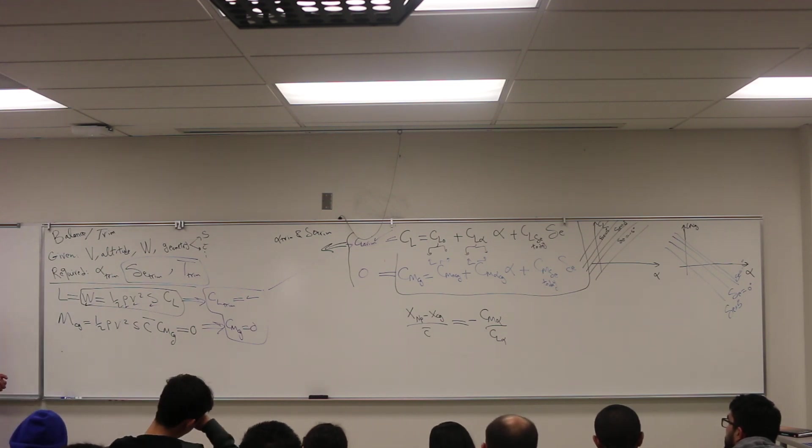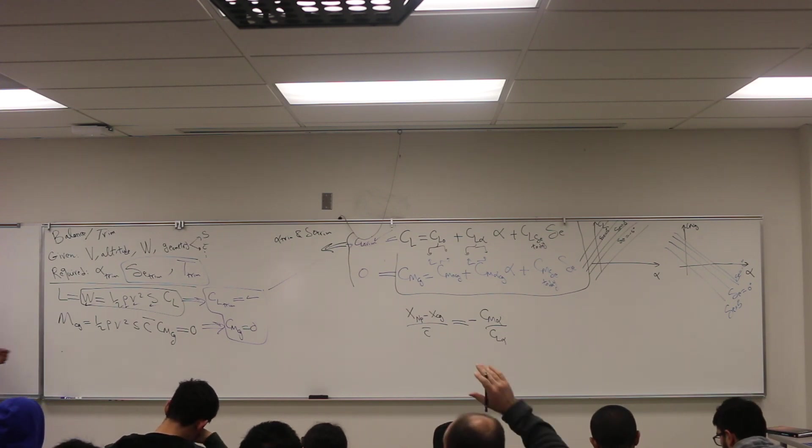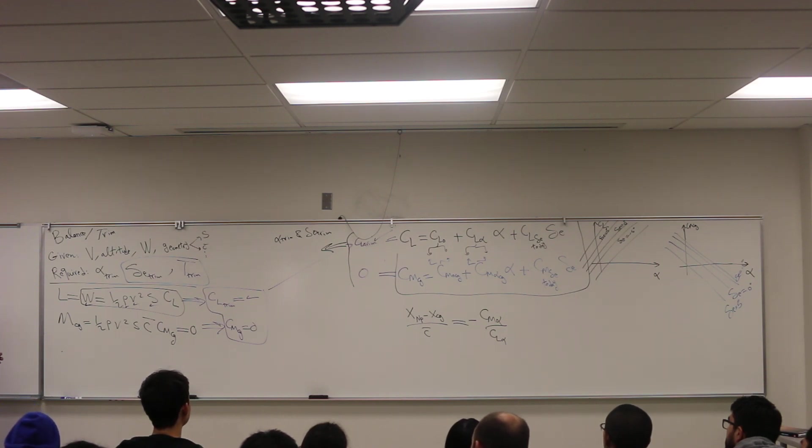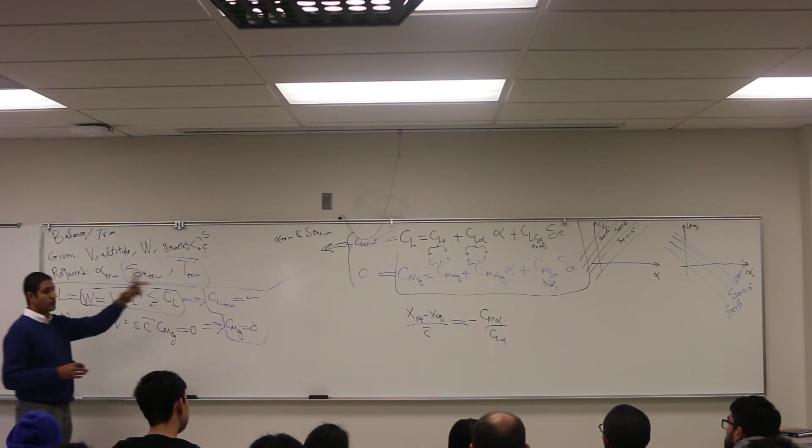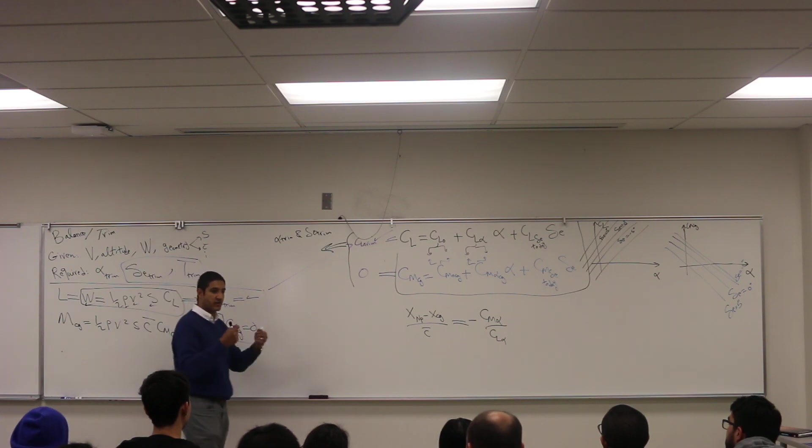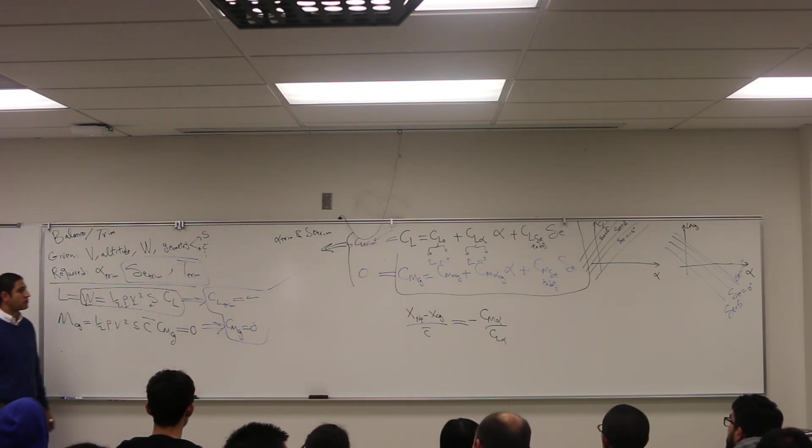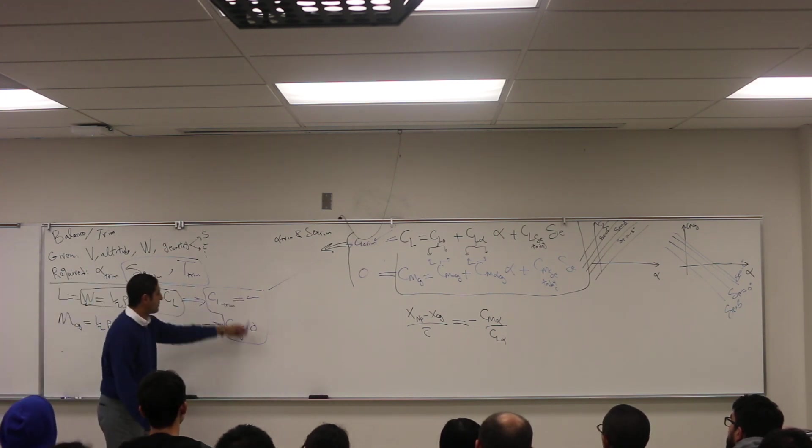Any questions about this? So we just choose an alpha in a certain range? No, I mean, these are two equations and two unknowns. So then you get specific values for alpha and delta elevator. These are not up to our control, unfortunately. They are dictated upon us due to the balance required.